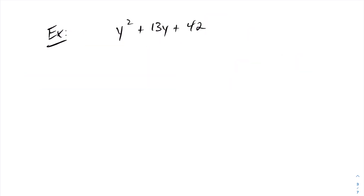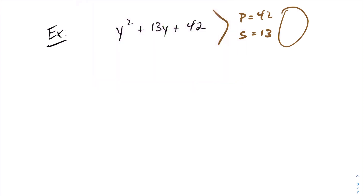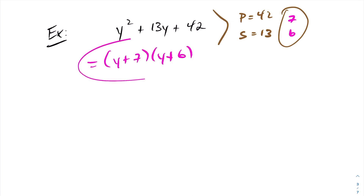Let's try this one. My product is 42 and my sum is 13. Two numbers that multiply to be 42 and add to be 13 are 7 and 6. So this will factor into y plus 7 times y plus 6.